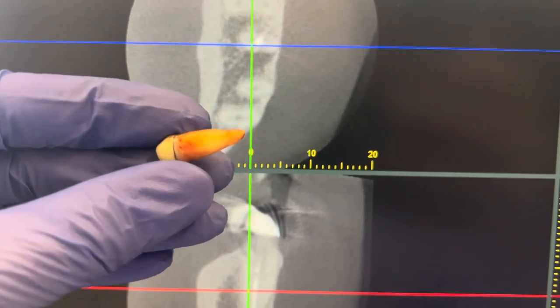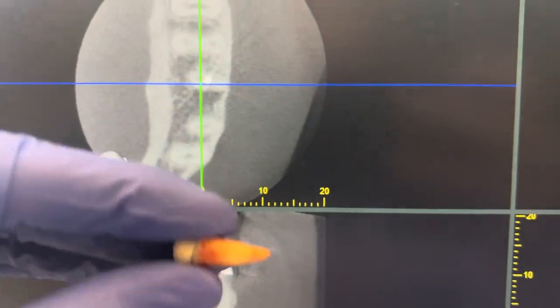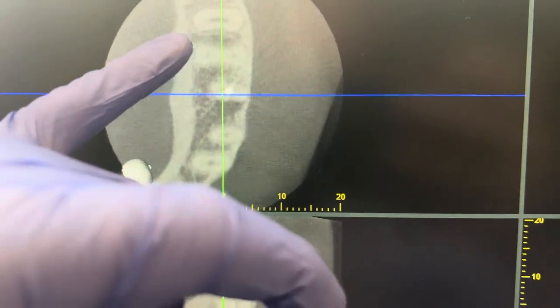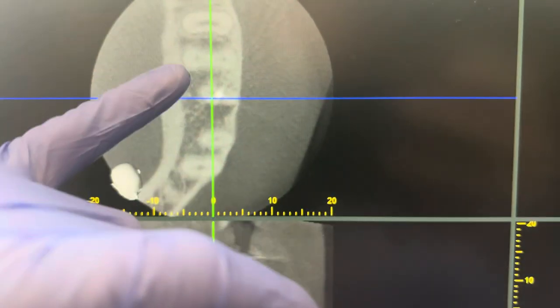All right, here's a short video on why you want to do a 3D x-ray before doing a root canal. If you look at this root here, it's got two canals. This one has one oblong canal.